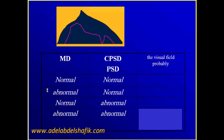Finally, scenario four: both are abnormal — the mean deviation is abnormal and the pattern standard deviation is abnormal. It means the whole field is depressed and some areas are much more depressed than others. Just by seeing these two numbers you can get this impression in your mind.